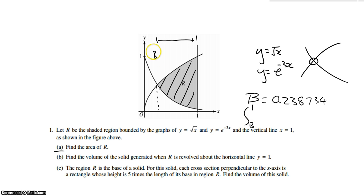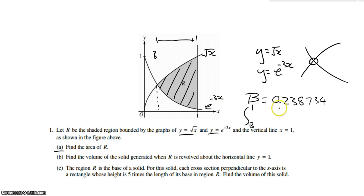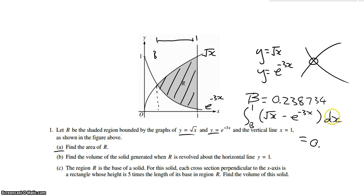We have to figure out if this is the first function or the second function. This is the square root of X, and this equation is e to the negative 3X. We need to do the upper function minus the bottom function. We plug that into our calculator and we'll get the area. We just round it off to three significant figures.